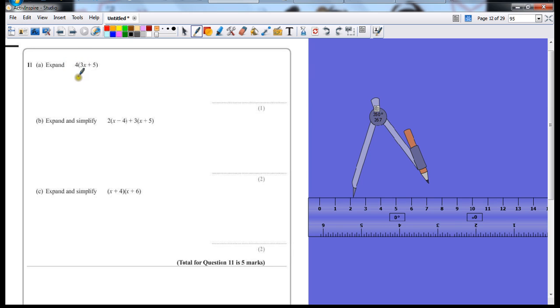4 lots of 3x is going to give us 12x. And then 4 lots of 5 is plus 20. That's your final answer. We can write it over here, but it's quite clear that this is our answer, so that will still give us the mark.